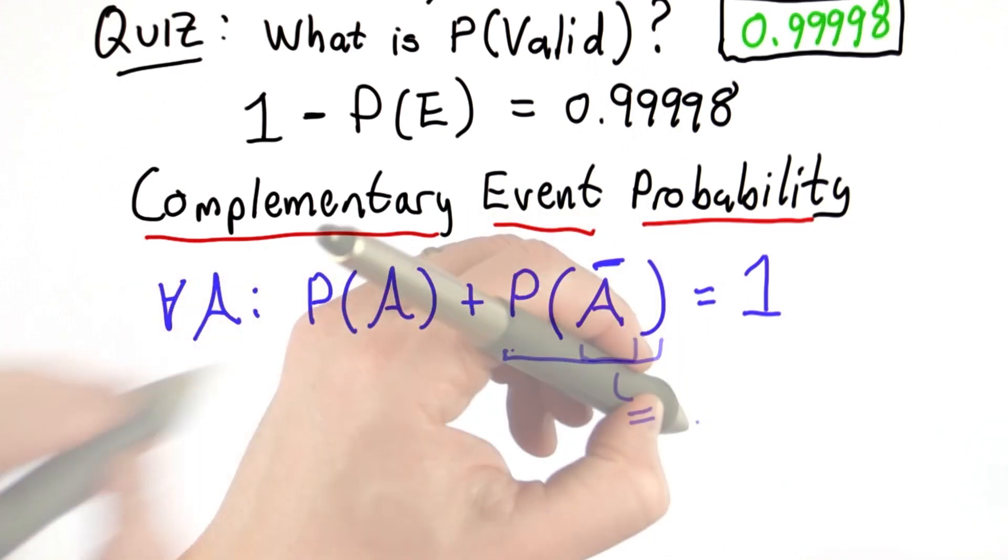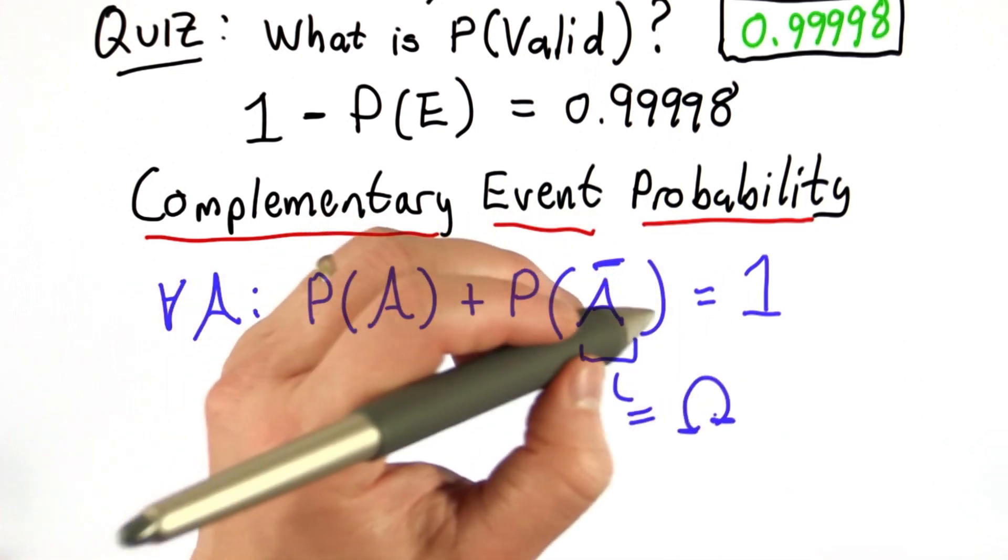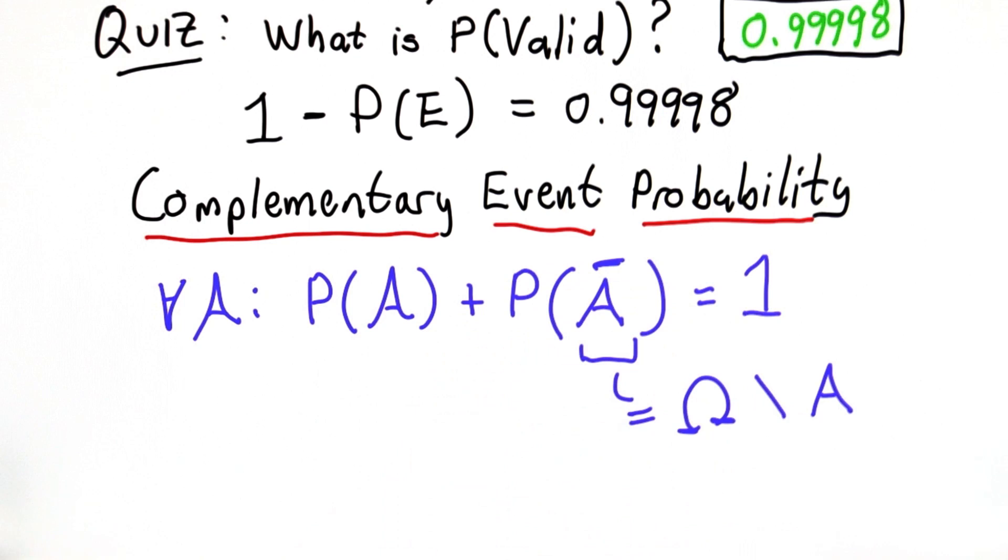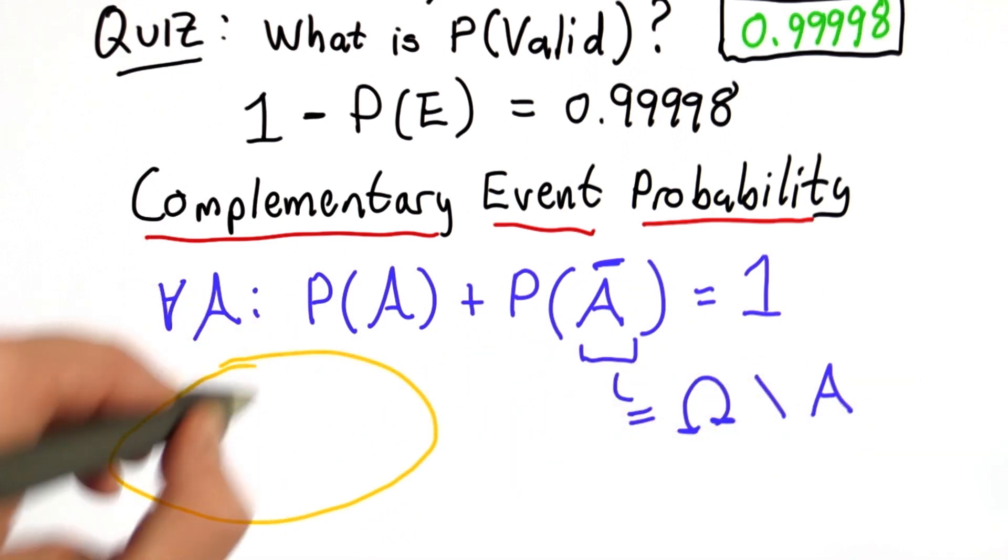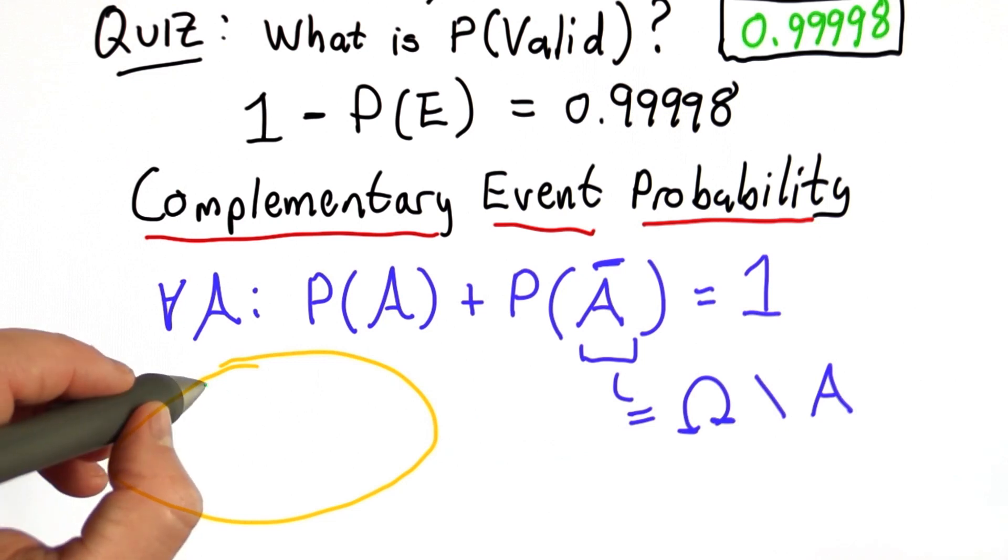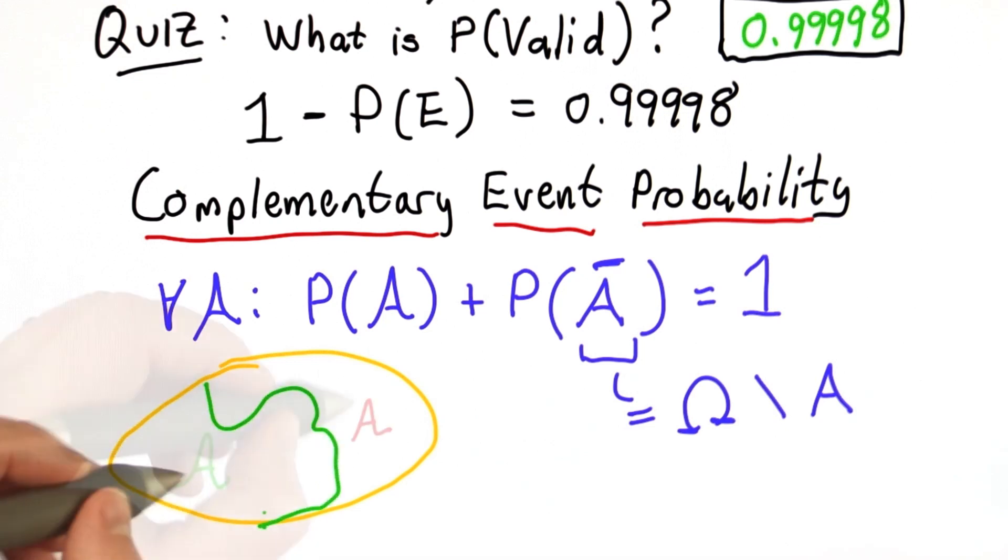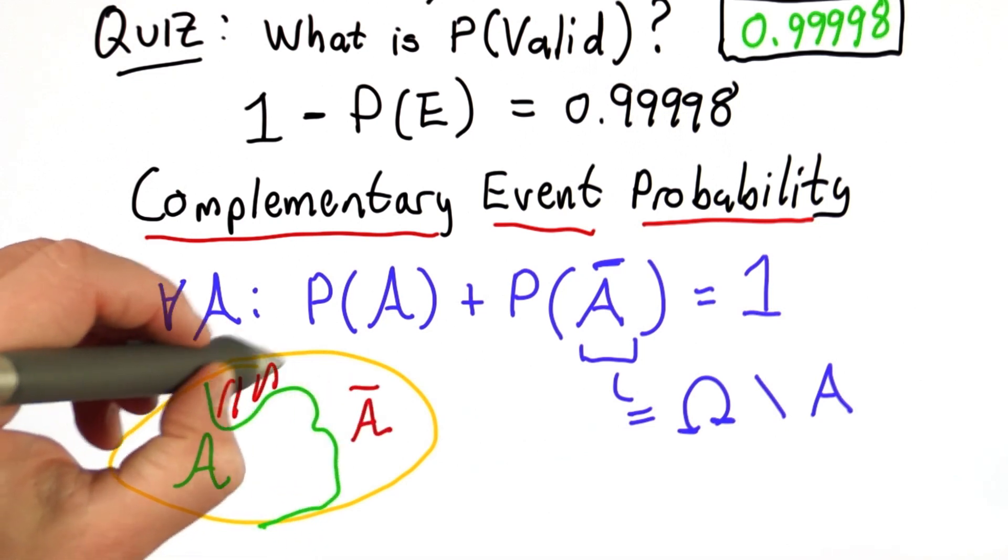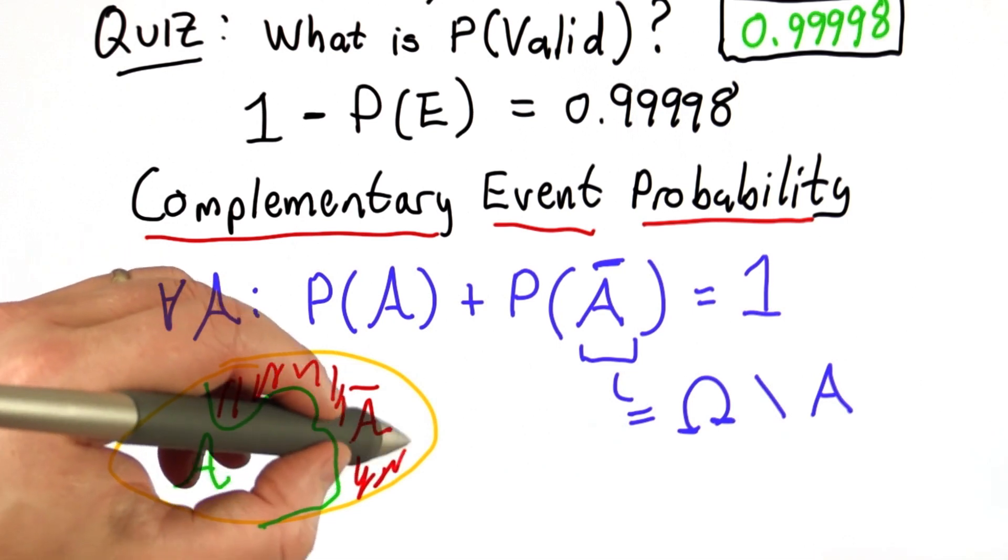And what the not A here means is the elements in the universe minus the elements in A. So this is set subtraction. We can think of that like this. So this is our universe. If we have some event A, all outcomes that are not part of A must be the complement of A.